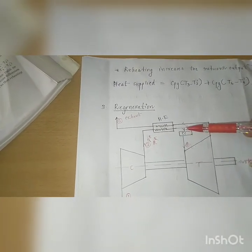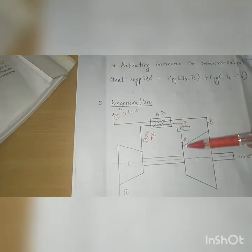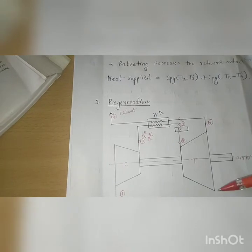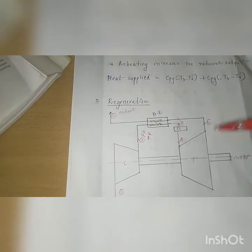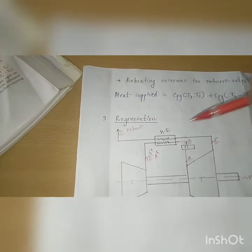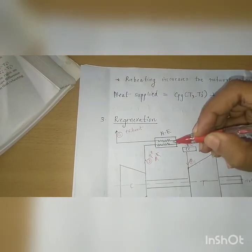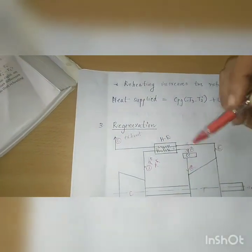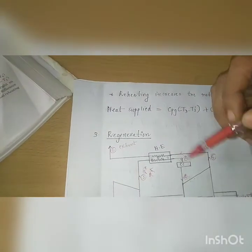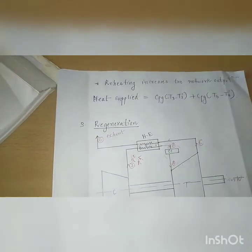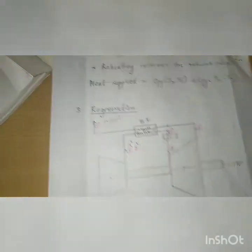The combustion chamber burns fuel and gives hot gas to the turbine. The exhaust gas then releases to the atmosphere. In this process, the exhaust gas heat — which would otherwise be wasted — is absorbed by the inlet compressed air through the heat exchanger, thereby increasing the efficiency of the gas turbine.